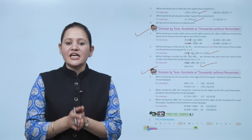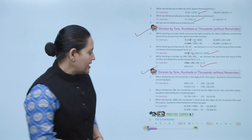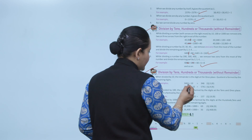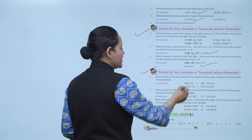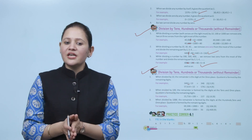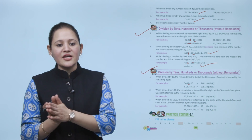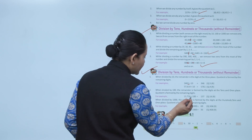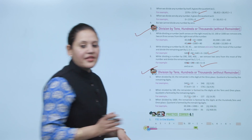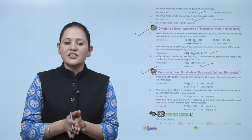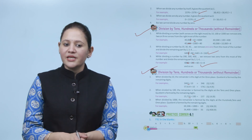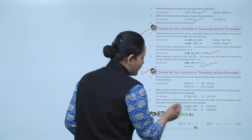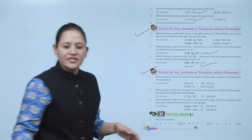Next is division by tens, hundreds, and thousands with remainder. When dividing by 10, the remainder is the digit at the ones place and the quotient is formed by the remaining digits. When dividing by 100, the remainder is formed by the digits at tens and ones place. When dividing by 1000, the digits at ones, tens, and hundreds place form the remainder — for example, quotient 69.